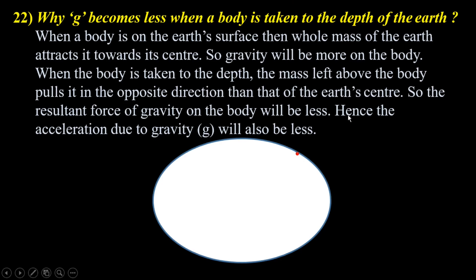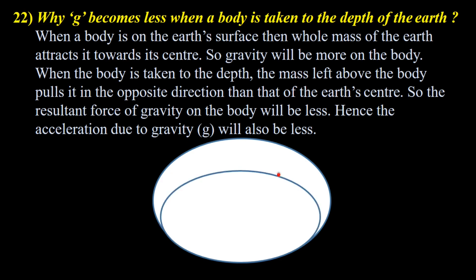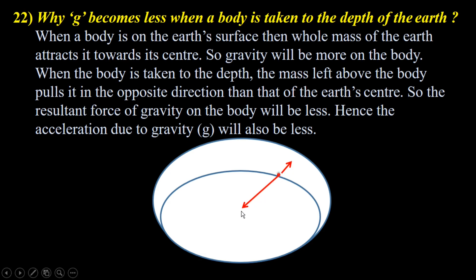This is the Earth, and this is a body on its surface. When it was on the surface, the whole mass of the Earth attracted it. But when it is taken inside the Earth, not the whole mass — only the mass below the body will attract it towards the center. But the remaining mass, which is away from this body in the opposite direction, attracts the body away from the center. That's why the gravitational force becomes less, because less mass pulls the body towards the center but a little mass pulls it away from the center. Hence, as we go inside the Earth, acceleration due to gravity will be less.